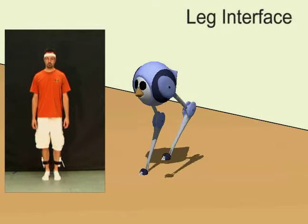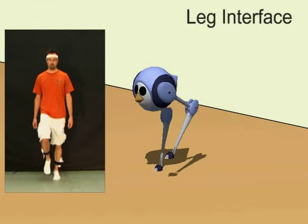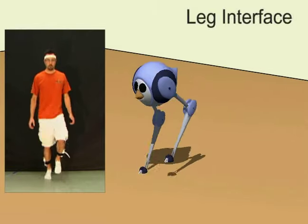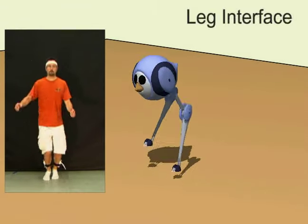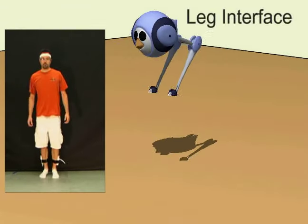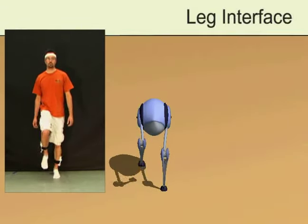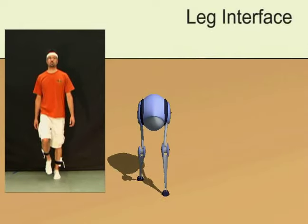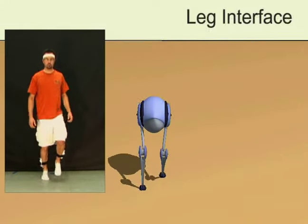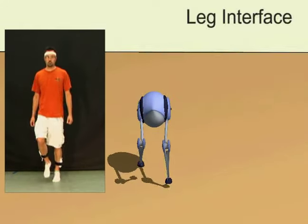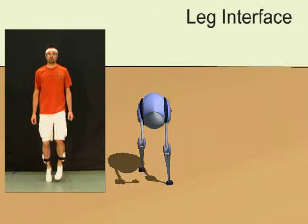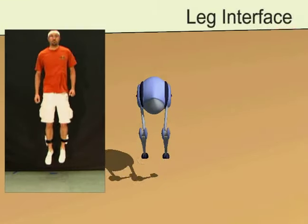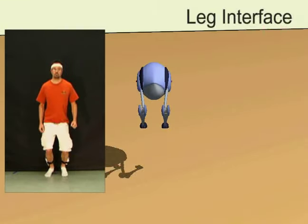The third interface requires attaching Wiimotes to the user's legs and head. The stepping motion of the legs specifies the gait, and the orientation of the head determines the rate of turning. Slower stepping specifies walking, faster stepping indicates running, and jumping with the legs in phase is a command to the character to jump.